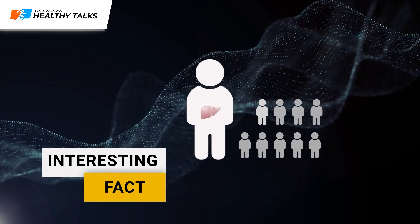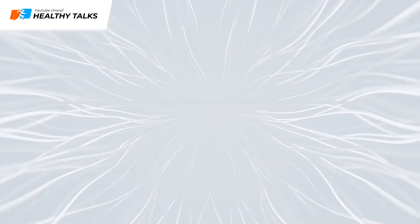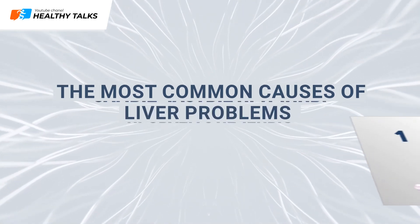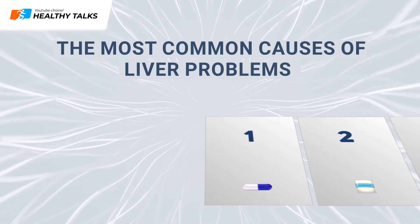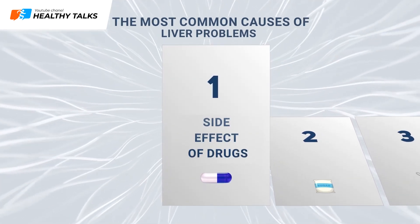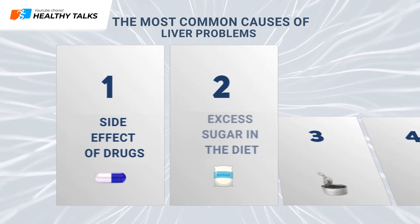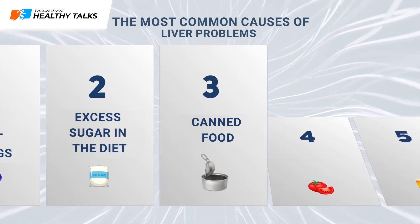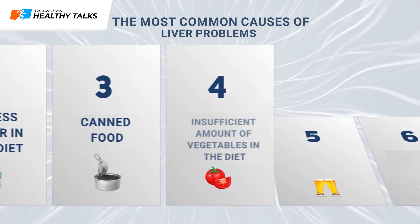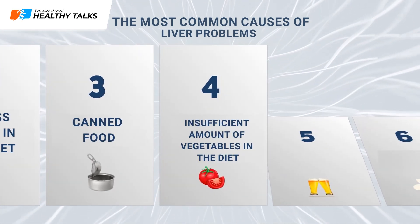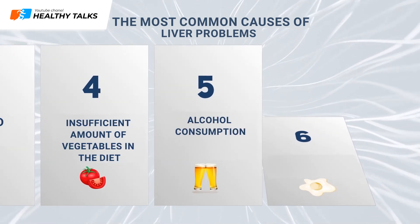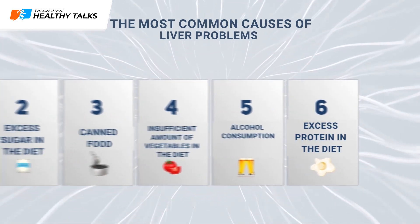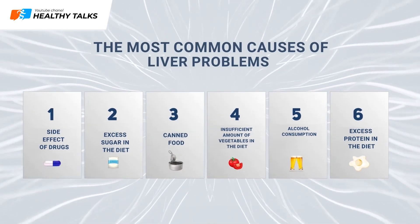According to statistics, one in ten cases of adverse reactions to a drug ends with severe liver intoxication. The most common causes of liver diseases for a modern person include: side effects of medications, excess sugar in the diet, canned foods, lack of fresh foods in the diet which overloads the liver and kidneys, not enough vegetables, insufficient enzymes and antioxidants, alcohol consumption, and excess protein in the diet — which leads to the formation of a large number of nitrogenous metabolic products that overload the liver and kidneys.